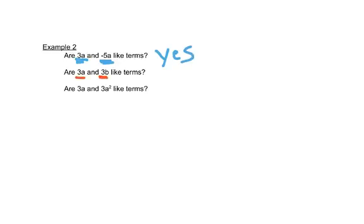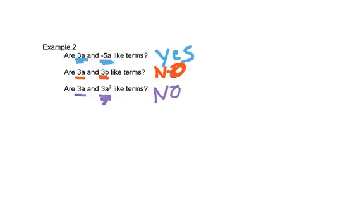Here we have 3a and 3b. The 3s match, but they don't need to match because those are coefficients — it's the letters that have to match. So these are not like terms. In the last example we have 3a and 3a squared. They both have a's, but these are not like terms because one has an a squared instead of a plain a. The letters and the exponents have to match exactly.